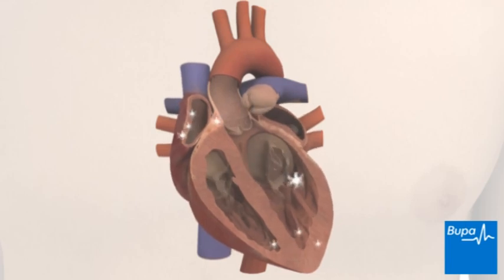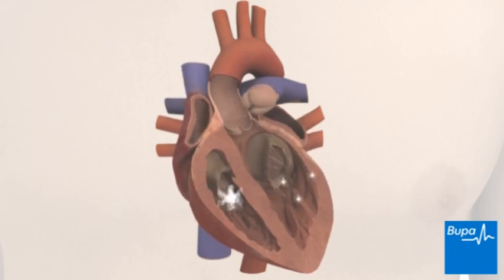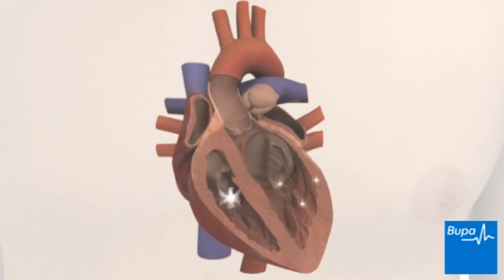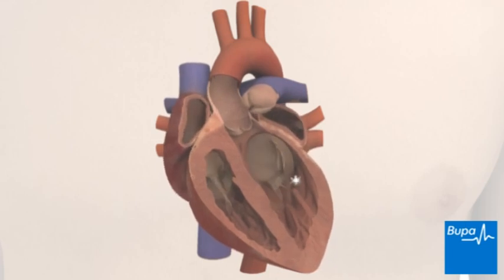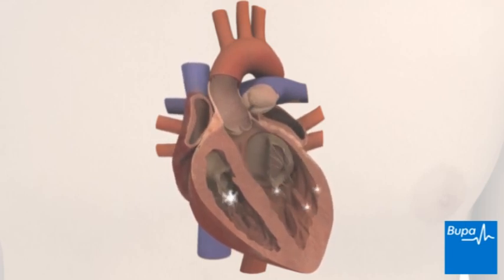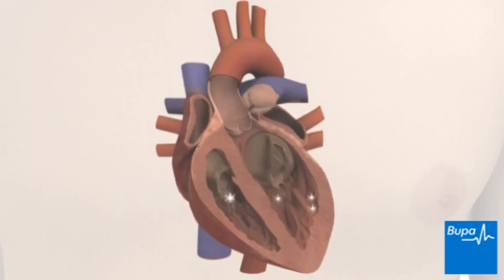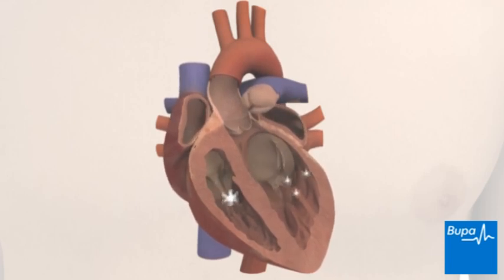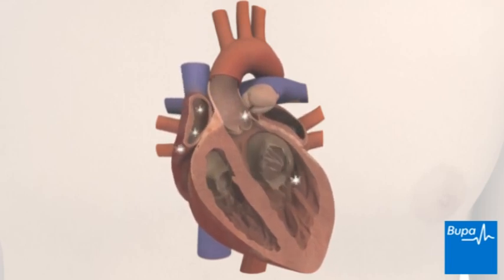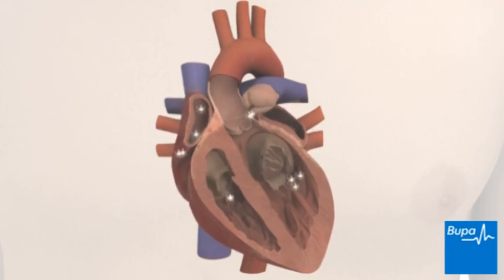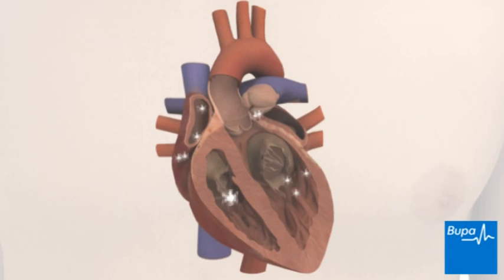In ventricular fibrillation, electrical impulses start firing from many different points in the lower chambers of the heart, very rapidly and in an irregular rhythm. This makes the heart quiver and unable to beat properly. Ventricular fibrillation is fatal without prompt treatment.